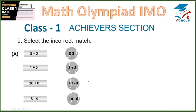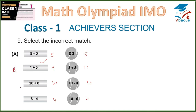Question 9: Select the incorrect batch. 3 plus 2 equals 5. 8 minus 3 equals 5. 4 plus 5 equals 9. 3 plus 8 equals 11. 10 plus 0 equals 10. 10 minus 0 equals 10. 8 minus 4 equals 4. 10 minus 6 equals 4. Checking: 5 and 5, 10 and 10, 4 and 4 — all match. So this is your correct option: B, C, or D as labeled.